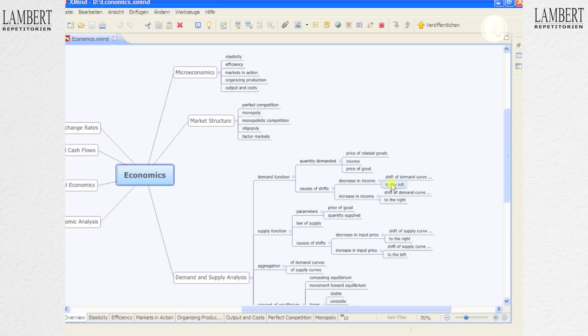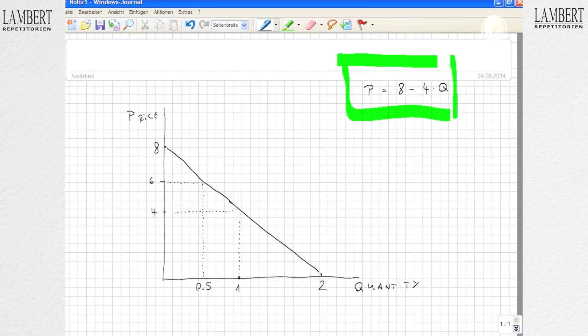This is what happens if income increases: we get a shift to the right. So as income rises, the quantity demanded rises as well. For each single price, there's a larger quantity demanded. That's important to understand.